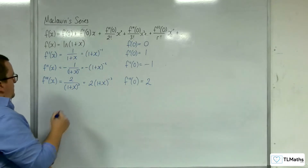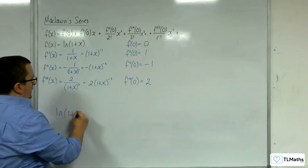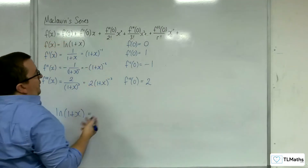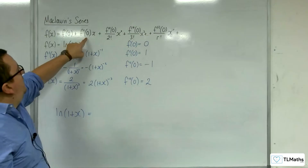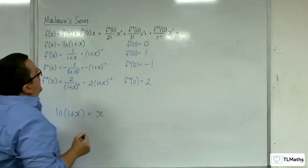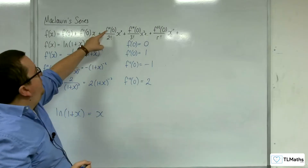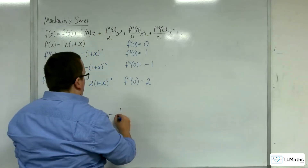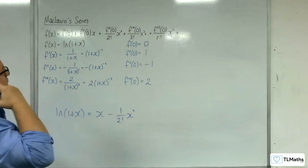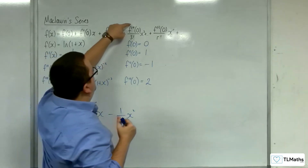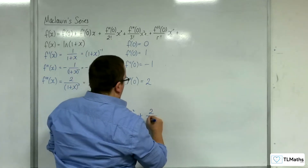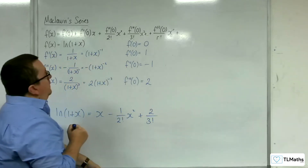So we can start to build this up. We've got log of 1 plus x equals: f of 0 first, which is just 0, so that term's gone. We've got f prime of 0 times x, which is just 1 times x. We've got f double prime of 0, which is minus 1, so minus 1 over 2 factorial times x squared. Then we've got f triple prime of 0, which is 2, so 2 over 3 factorial times x cubed.